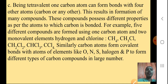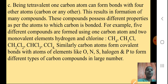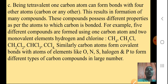Being tetravalent, one Carbon atom can form bonds with four other atoms — its valence is four. This results in the formation of many compounds, which possess different properties depending on the atoms to which Carbon is bonded. For example, five different compounds are formed using one Carbon atom and two monovalent elements, Hydrogen and Chlorine: CH4, CH3Cl, CH2Cl2, CHCl3, and CCl4.